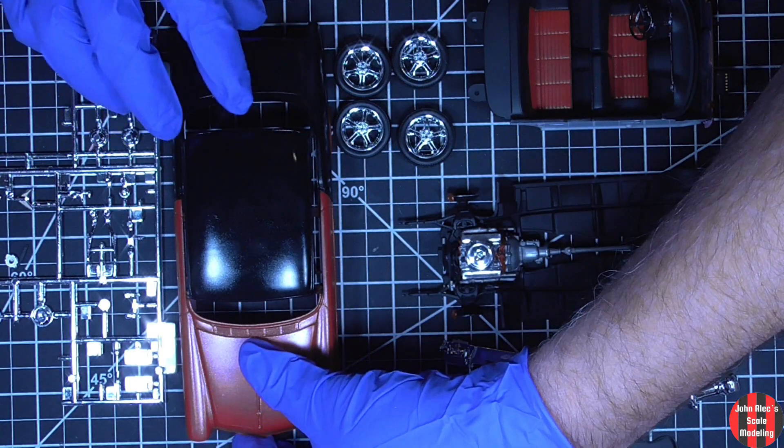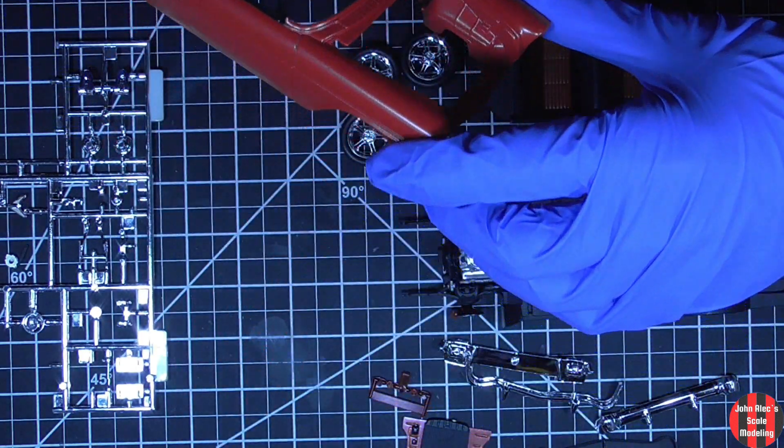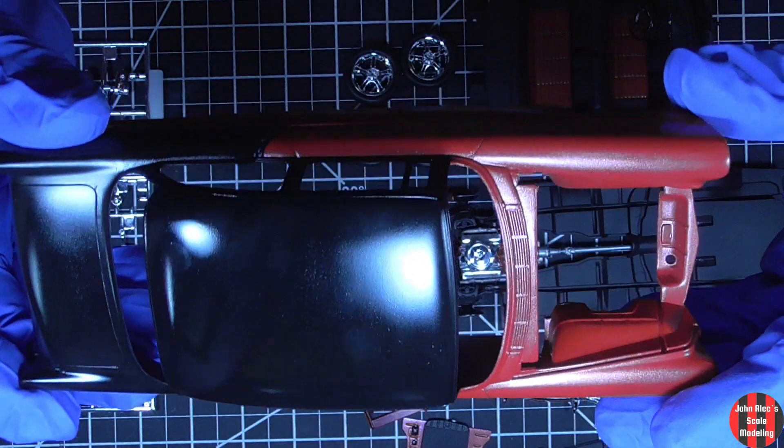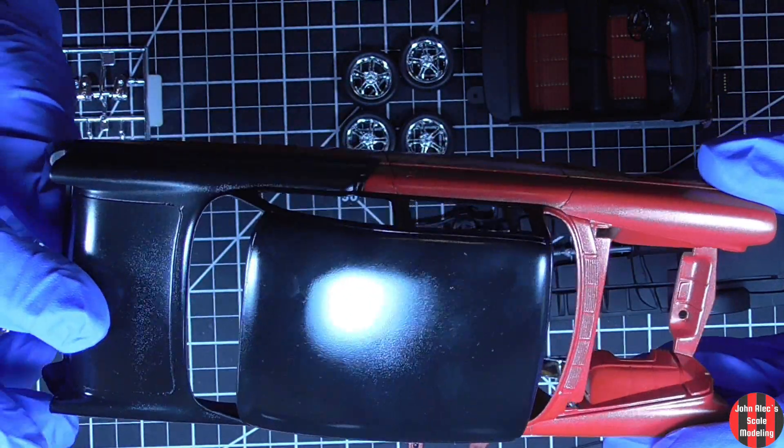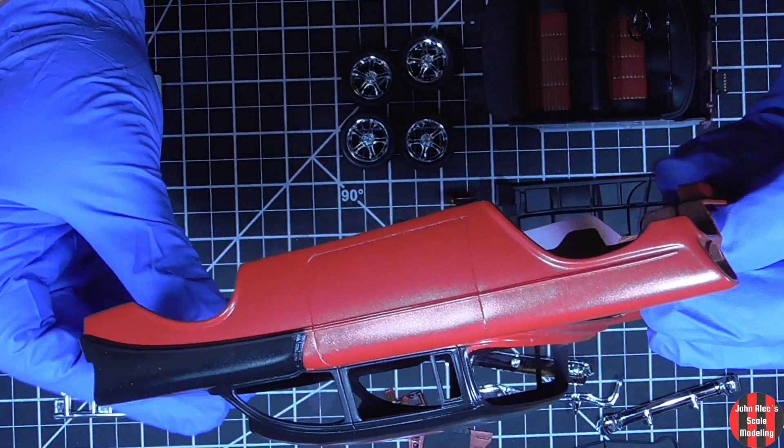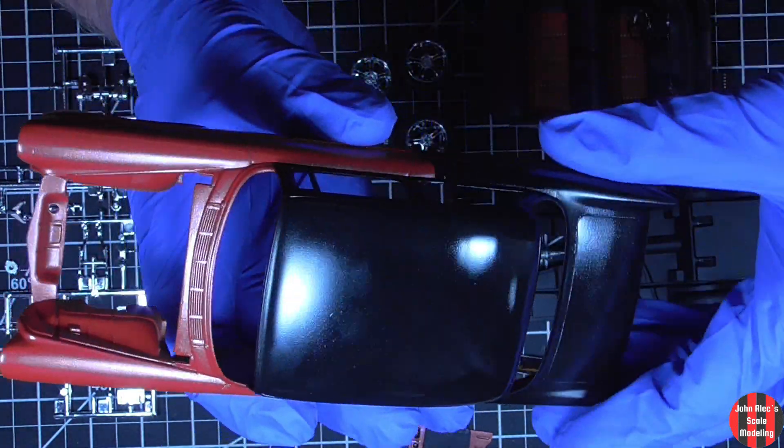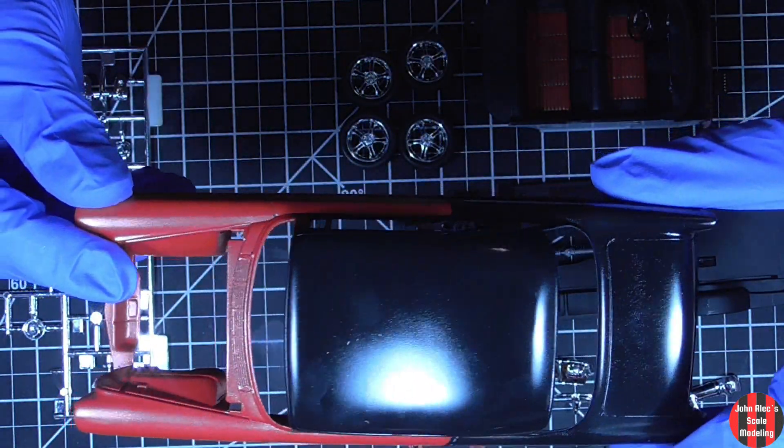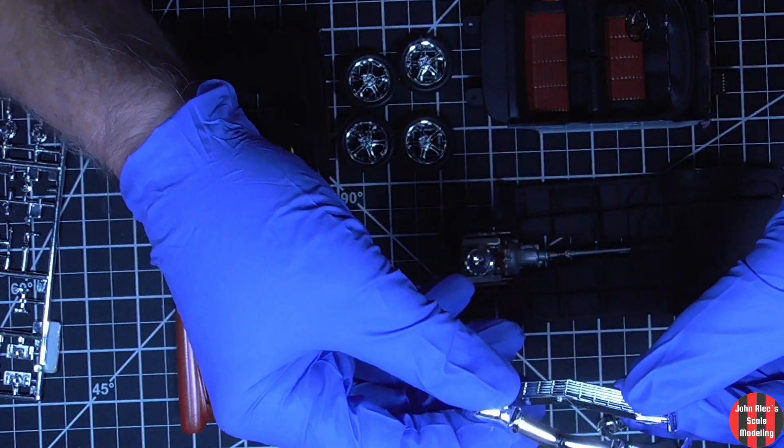Six coats each of Mr. Color Metallic Red and Mr. Color Gloss Black. That took about a week and a half. It hasn't been wet sanded or gloss coated yet. That's the next major step. I need to put on the chrome and rubber seal paint.